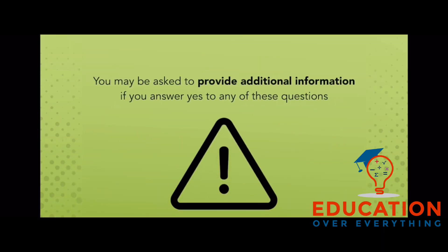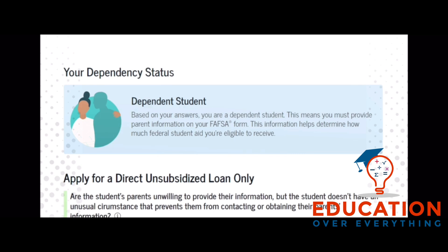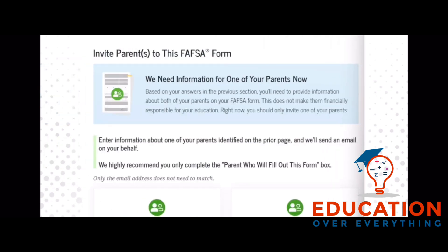You may be asked to provide additional information if you answer yes to any of these questions. If you are considered dependent, you will be given the opportunity to select that you would only like to be considered for a direct unsubsidized loan if parents are unwilling to provide their information. If you are a dependent student or an independent student with a spouse who filed married filing separately, you will need to invite contributors to provide consent to their information being included on the FAFSA.